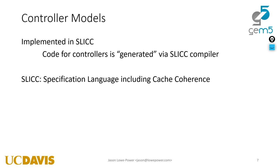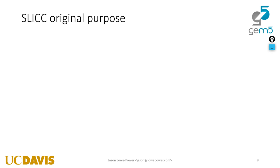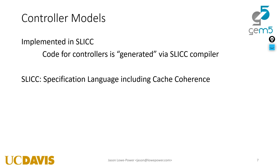Controller models are implemented in a language called SLICC — another domain-specific language with its own compiler within GEM5. SLICC is a source-to-source compiler that takes SLICC code and generates C++ code which is then compiled. The original acronym stood for Specification Language Including Cache Coherence. It is really hard to find documentation on what the original acronym was — it seems like Milo and Dan just picked an acronym that sounded good and worried about what it stood for later. SLICC was developed as part of GEMS, around the late 90s to early 2000s.